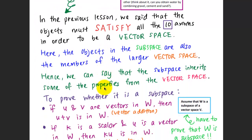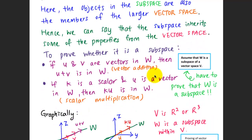In the previous lesson, we said that objects must satisfy all 10 axioms in order to form a vector space. Here, the objects in the subspace are also members of the larger vector space, so the subspace inherits some properties from the larger vector space. To prove that a smaller group of objects is a subspace, you only need to prove two axioms: the first axiom about vector addition, and the sixth axiom about scalar multiplication. Assume that W is a subspace of vector space V, and we prove it using these two axioms.